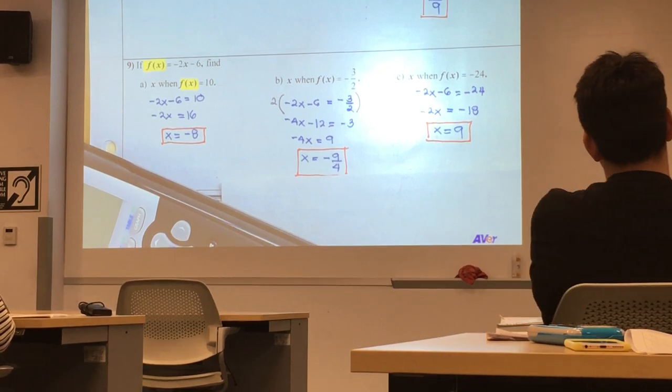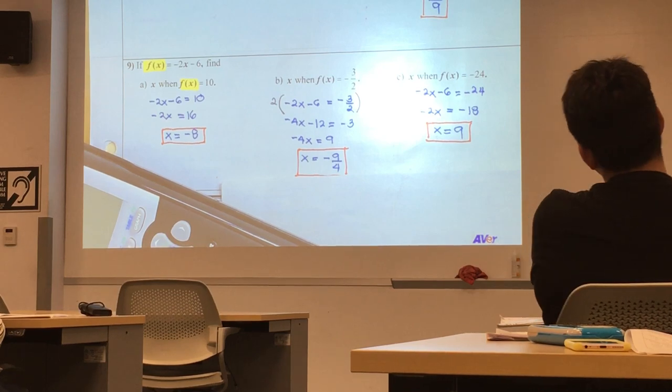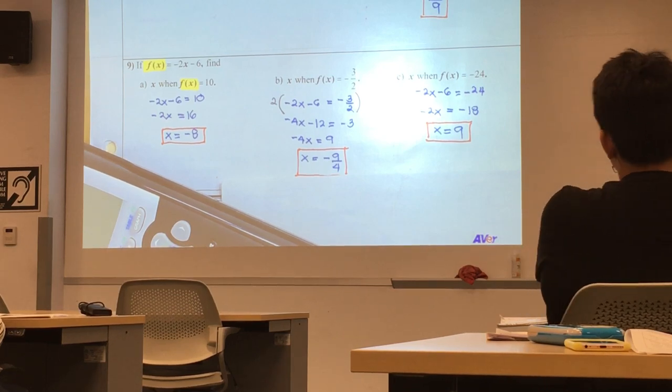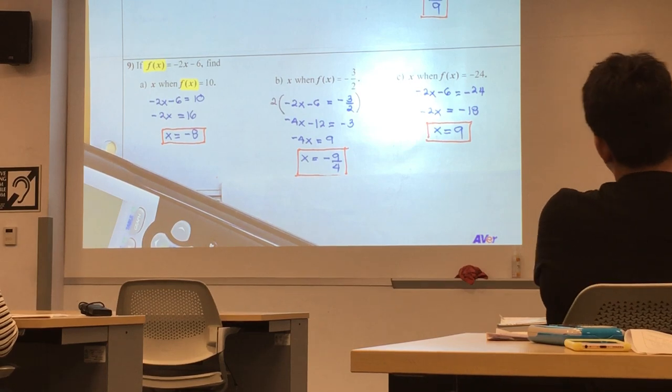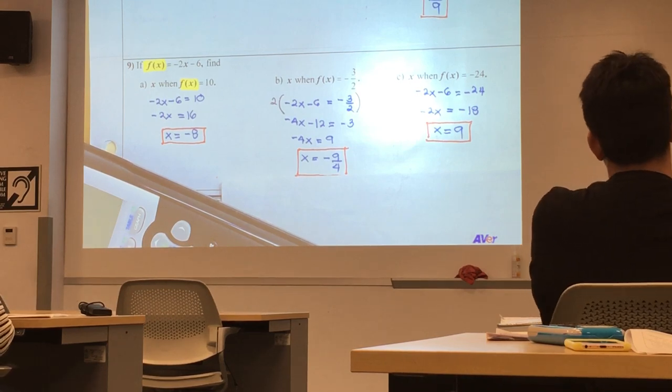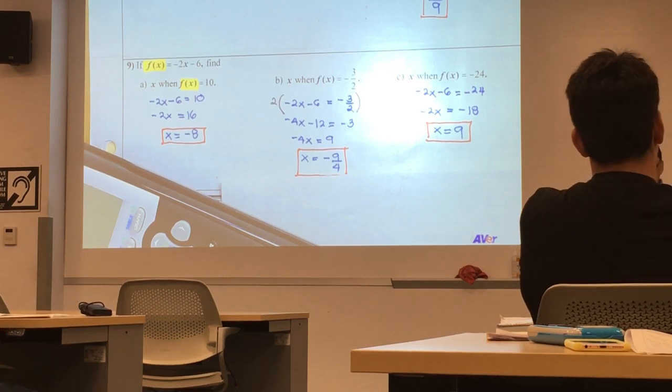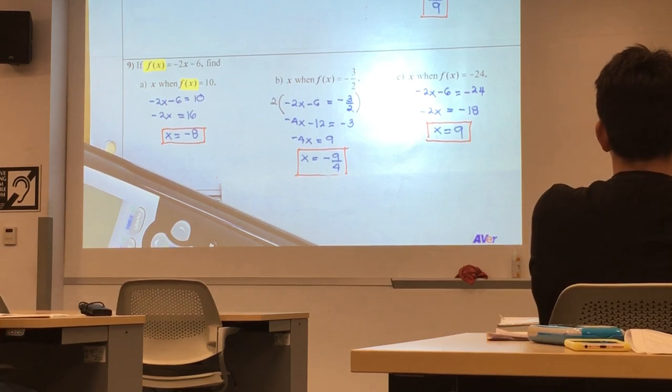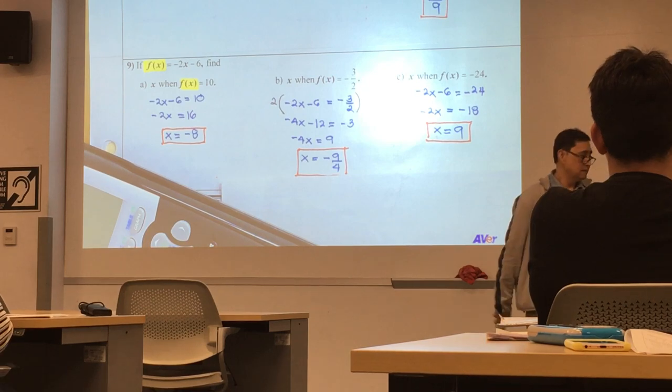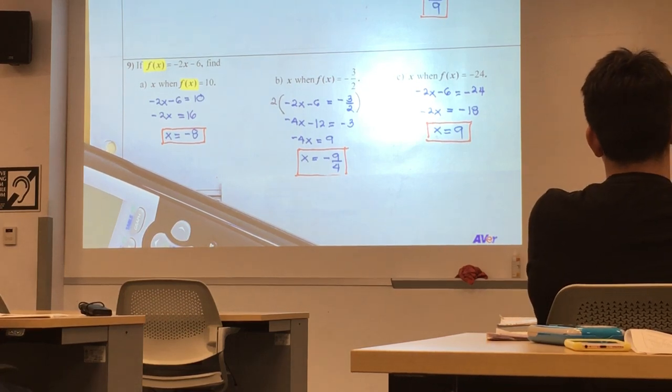To clear off fractions, you multiply by the least common denominator. But there's only one denominator, therefore, it's the LCD. So, if you have 2/3 and 3/4, therefore, you have to find the LCD. In this case, it's a little bit simpler because there's only one denominator. Did I answer your question? Yes. Clear off the denominator by multiplying by that denominator. Let's get moving.